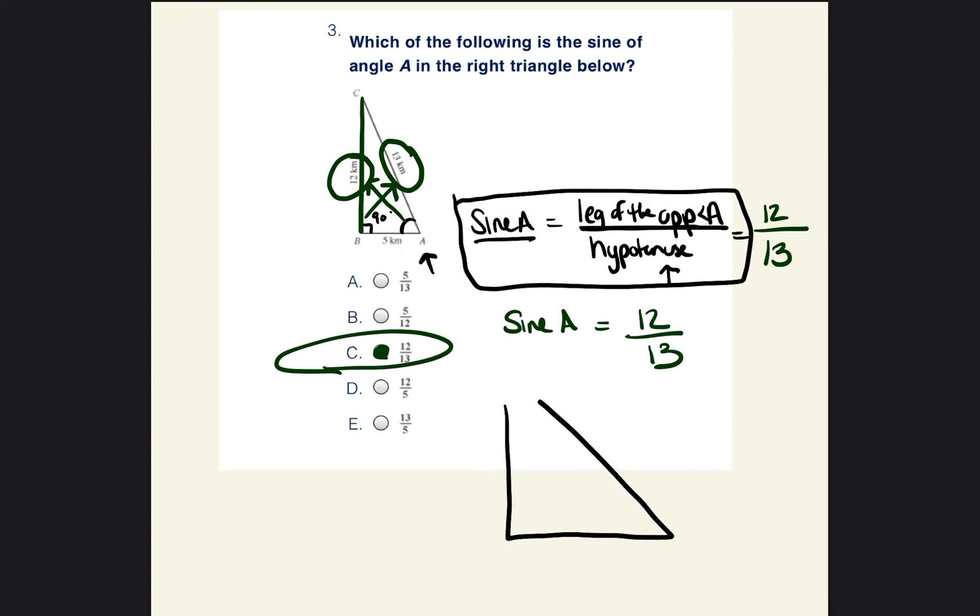And then you'll know, okay, this is the leg of the opposite angle. But then also they're hoping that you remember what the hypotenuse is. And again, the hypotenuse is just the leg that's across from the 90 degree angle. So this is the 90 degree angle, so the hypotenuse is the leg across from it. So right here would be the hypotenuse. So whatever measure this would be, that would be the measure that goes on the bottom of that fraction.